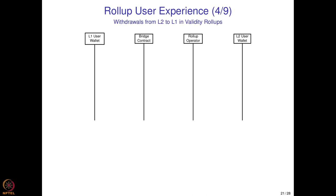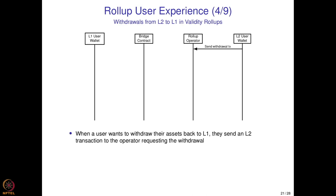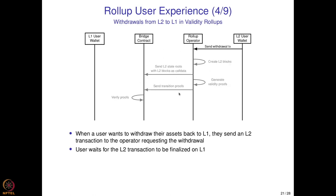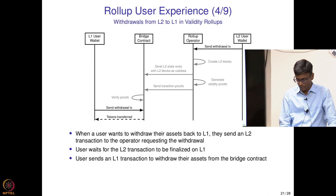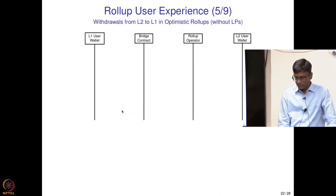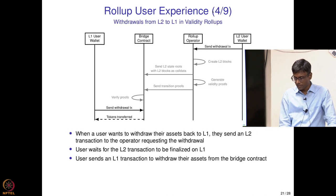For withdrawals from layer 2 to layer 1: in validity rollups, the user sends a layer 2 withdrawal transaction, it is included in a block, and once the proof is verified on chain — latency can be 1 hour, 6 hours, or up to 10 hours depending on the rollup — the user sends an L1 withdrawal transaction and the tokens are transferred. Withdrawals from layer 2 to layer 1 are expensive because they cost layer 1 fees, so users typically stay on layer 2 as long as possible and withdraw only when needed.